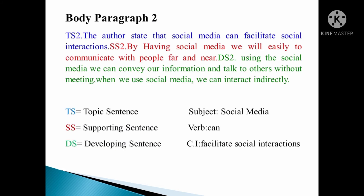Body paragraph two, topic sentence two: the author states that social media can facilitate social interactions. Supporting sentence two: by having social media we will easily communicate with people far and near. Developing sentence two: using social media we can convey our information and talk to others without meeting; when we use social media, we can interact indirectly. In this body paragraph, the subject is social media, verb is can, and the controlling idea is facilitate social interactions.